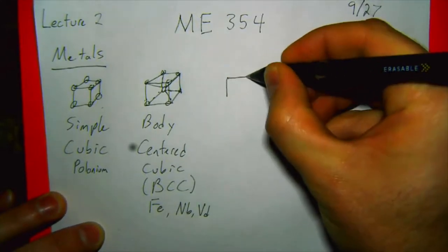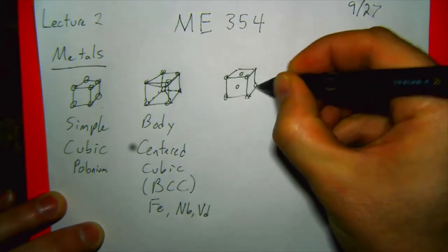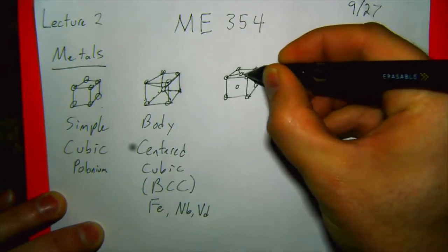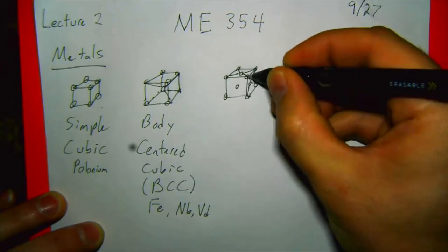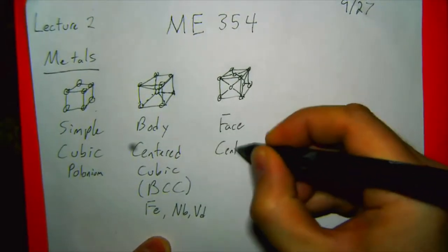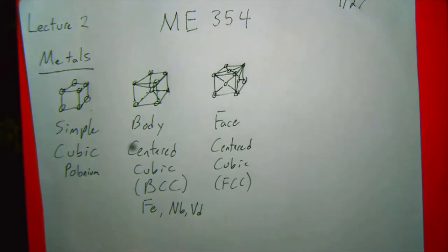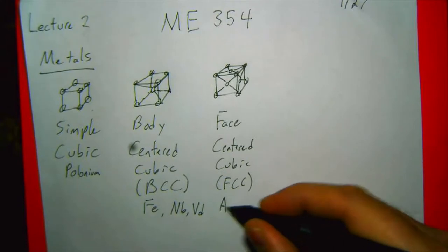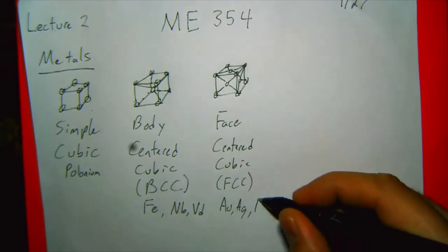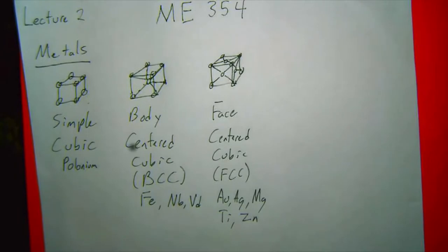FCC — face-centered cubic — is actually probably the most common atomic structure. It has atoms at the corners and also on all of the faces. This is actually the most dense packing of atoms: if you think of atoms as spherical balls, FCC is the packing where you can fit the most balls into a space. Examples include gold, silver, magnesium, titanium, and zinc.